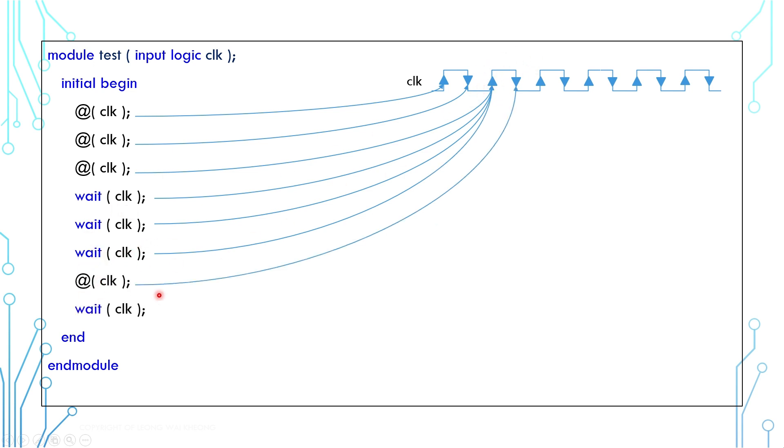If we use @ clock to move the clock forward to this point where clock becomes 0, then the wait clock will wait until the clock becomes 1, which happens at this point.